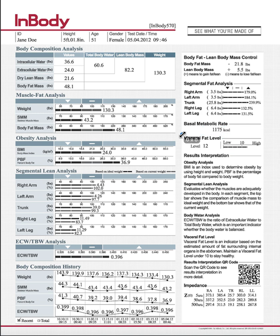Next, we have your visceral fat. That is what is underneath your muscle around your organs — it's what puts people at risk for heart disease, and it's no good. We want to see this number below 10. It will come down along with your body fat, but it's also associated with stress — a really high visceral fat with a low body fat percentage is a sign of a high-stress lifestyle.